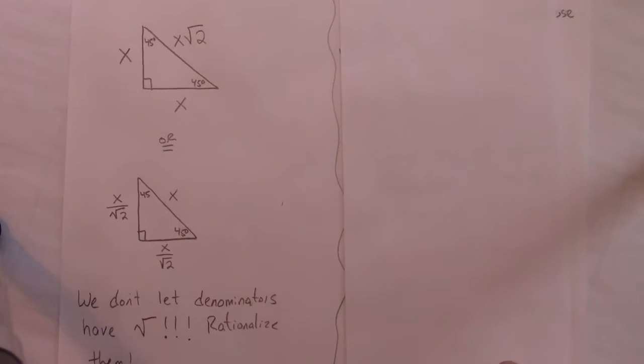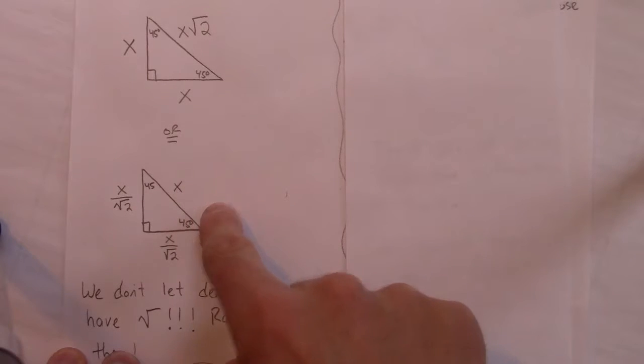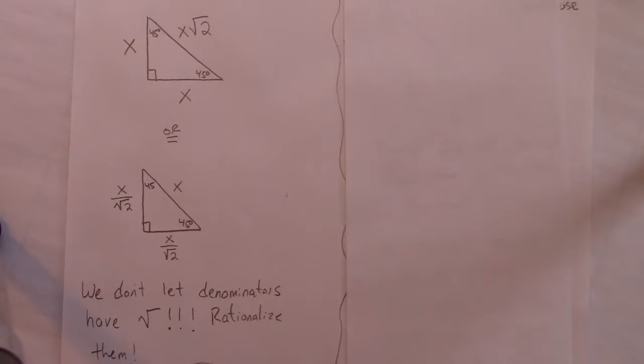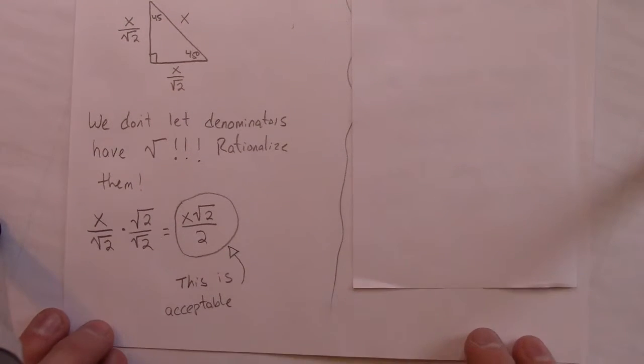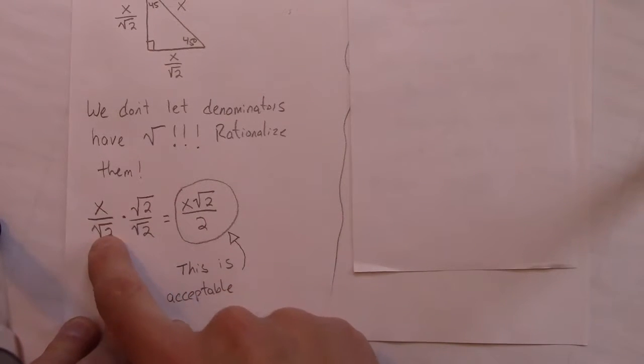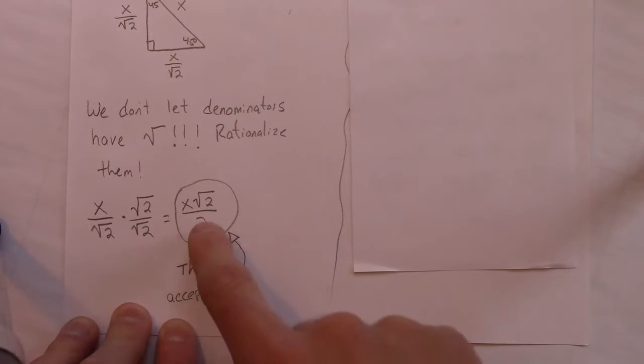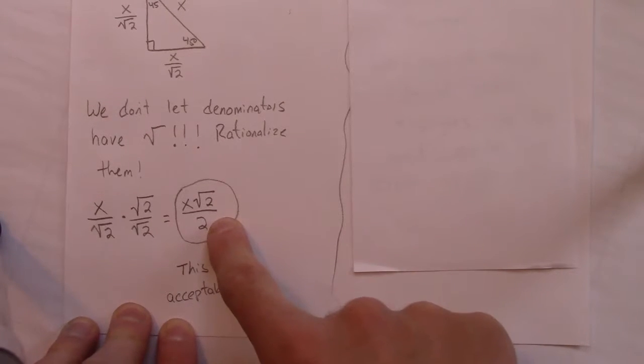You might see that written like this instead as x is this side, and these would both be x over root 2. But what happens is we don't like the denominators to have a square root. So we do something called rationalizing the denominator, which is another hidden skill within this unit. And what you do is you take that x over root 2, and you multiply times root 2 over root 2, which is equivalent to 1. And when you do that, you get this. Now this ends up showing up in the unit circle, and we're going to see that later. So there's just a pattern that is revealed. This number is really important.